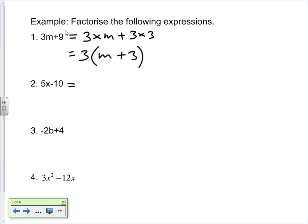What about this one? What are we going to get if we factorize this one? 5x-10. What's the common factor? 5. 5 is the common factor. So we take 5 out the front, 5(x-2). Good.